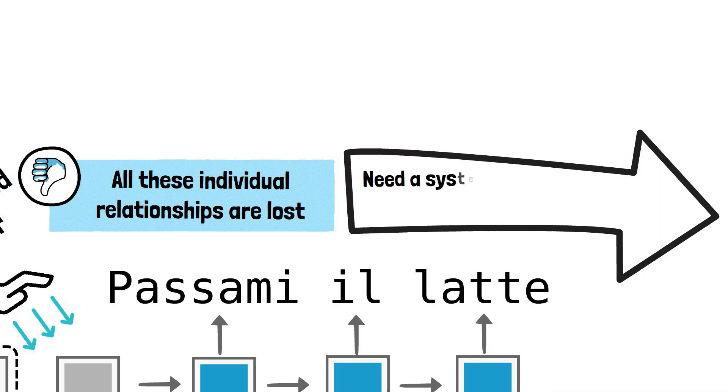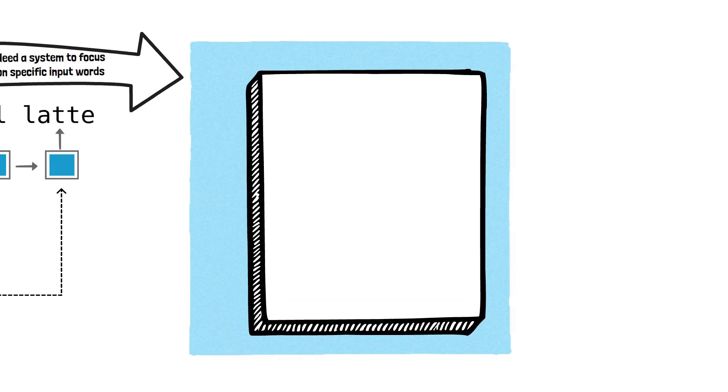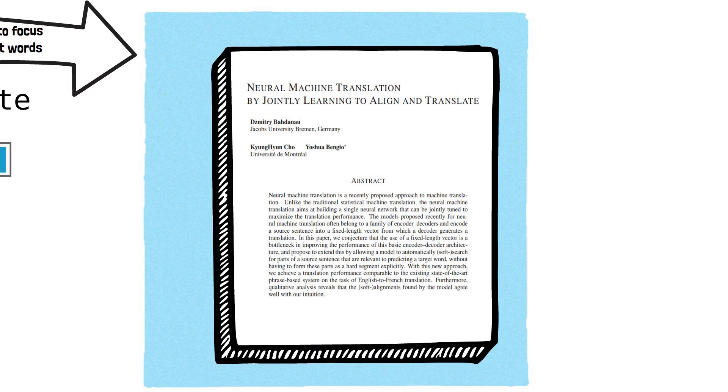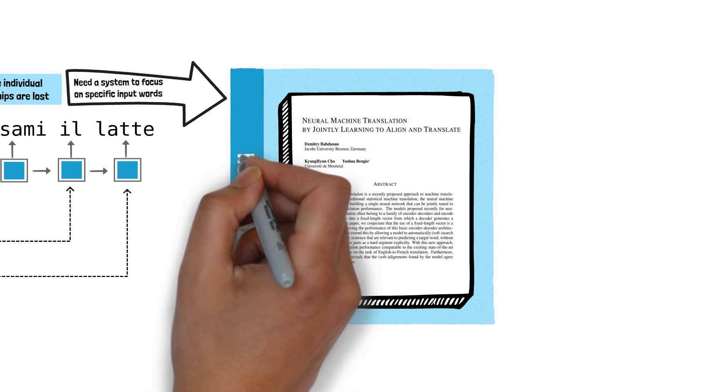We need a system that allows individual outputs to focus selectively on specific parts of the input. Such a system was proposed in the paper titled Neural Machine Translation by jointly learning to align and translate by Bahdanau et al. Although not originally termed as such in the paper this approach is now widely known as the attention mechanism.